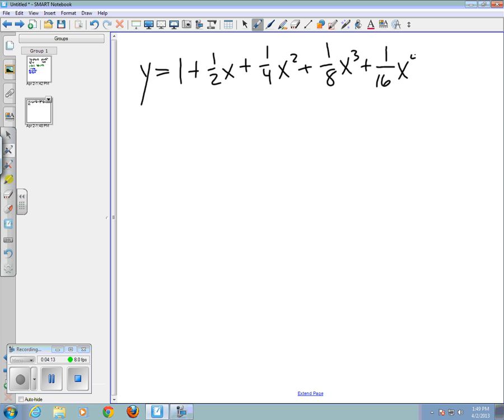One sixteenth x to the fourth plus dot dot dot. So we call each of these pieces that our polynomial is made up of terms. We have a constant term that's one and what we call the x term which would be one half x, an x squared term, x to the third term and so on. There would be a term for every power of x. You might think of this as an infinite polynomial.